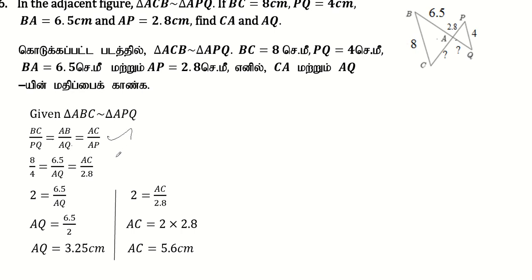Since triangle ABC is similar to triangle APQ, we can set up proportions. AB value is 6.5cm, AP value is 2.8cm. We can write: 2 equals 6.5 divided by AQ equals AC divided by 2.8.